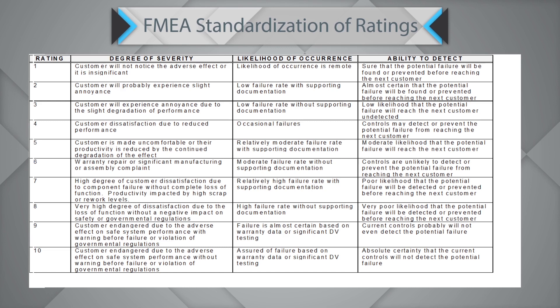If the likelihood of occurrence of a particular failure mode is remote, I am calling it 1 on a rating scale of 1 to 10. While a 10 means I am assured of failure based on warranty data or significant testing. For detection, a 10 would mean it is absolutely certain that the current controls will not detect the failure. And a 1 means it is sure that the potential failure will be found or prevented before reaching the next customer. When you set out to make a FMEA, you will have to create a grid of this sort to identify and apprise all participants about the meaning of the severity, occurrence, and detection rating scales. This sample sheet could be a great help.